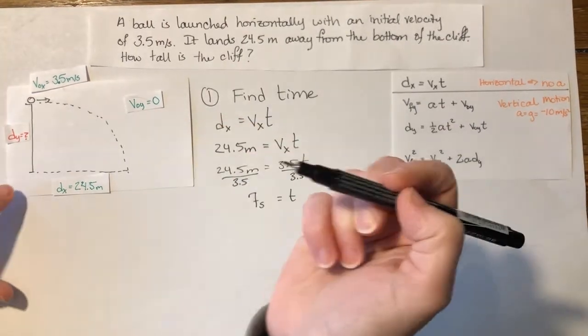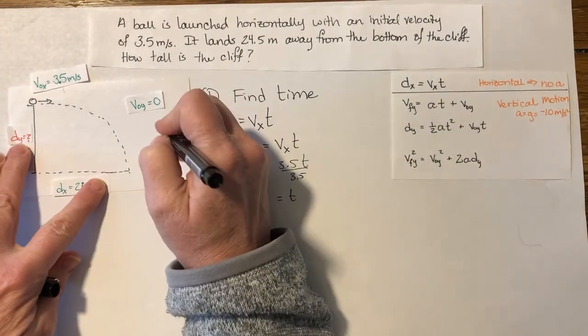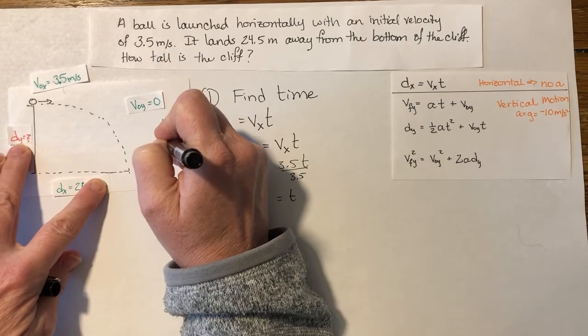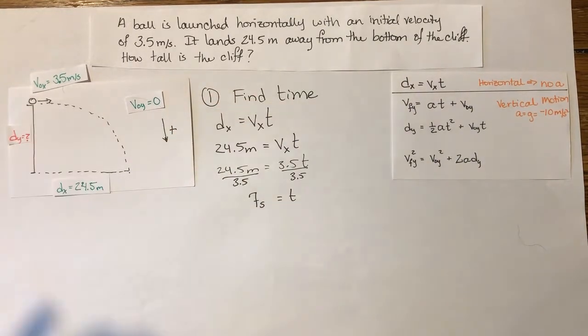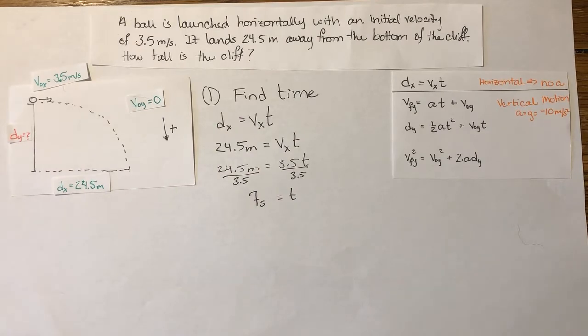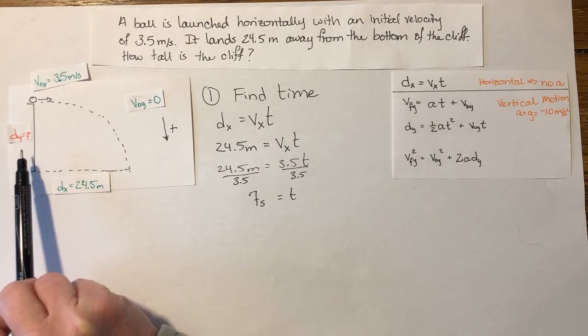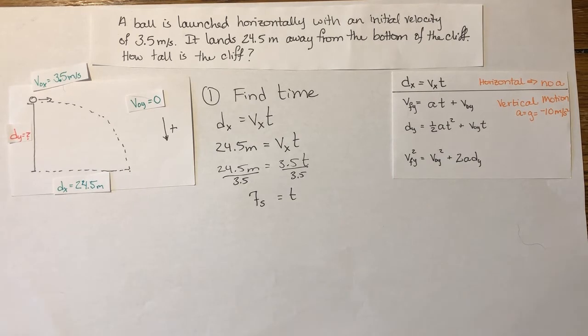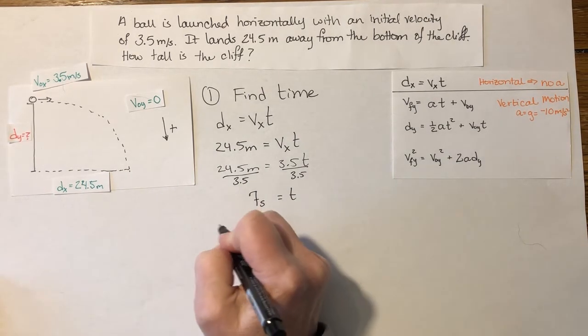I realized I did forget to mention that for this particular setup, I decided to set up that down is going to be positive because I do not have any initial velocity in the y direction. And so it's just going to simplify a lot of my math. If you set up up as positive, what you will find is that your dy is going to end up being a negative number. Totally fine. Just make sure that you follow your own convention, whatever you decide that it is.